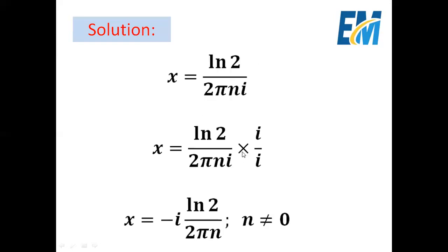Then we can multiply the numerator and the denominator by i. So in the numerator we have ln 2 multiplied by i. In the denominator we have 2πn multiplied by i square, where i square is minus 1.